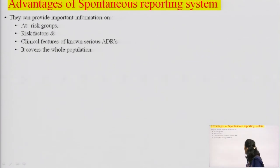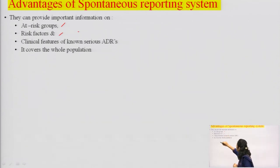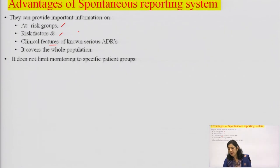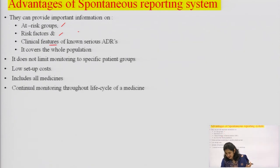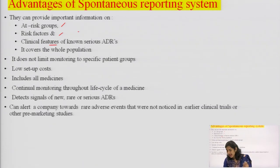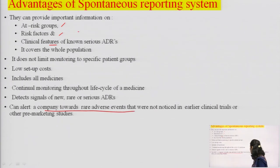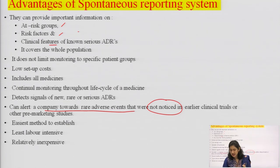Advantages of the spontaneous reporting system: it provides information on at-risk groups and risk factors; it provides information about clinical features of known serious ADRs; it covers the whole population and does not limit monitoring to specific patient groups; it has low setup cost — only a simple form needs to be filled; it includes all medicines; there is continual monitoring throughout the life cycle of a medicine; it detects signals of rare or serious ADRs; it can alert companies to rare adverse events not noticed during clinical trials or pre-marketing studies; it is the easiest method to establish, least labor-intensive, and relatively inexpensive.